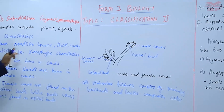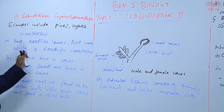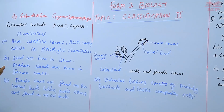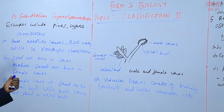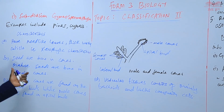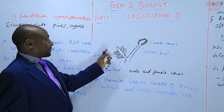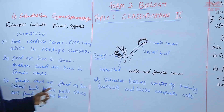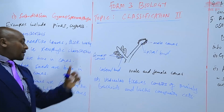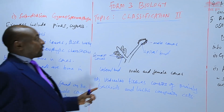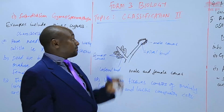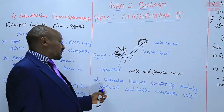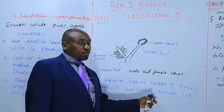Other characteristics include needle-like leaves with a thick waxy cuticle, generally showing xerophytic characteristics. Seeds are borne in cones, and especially the mature seeds are formed on the female cones. Female cones are found on the lateral buds — the ones that become side branches — while male cones are borne on the apical buds at the tip of the shoot. The vascular tissue consists mainly of tracheids and lacks companion cells.